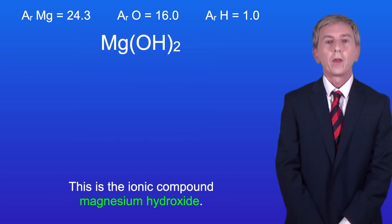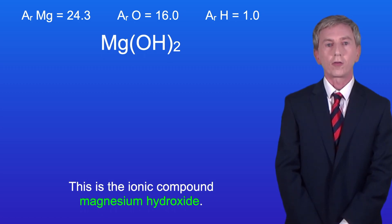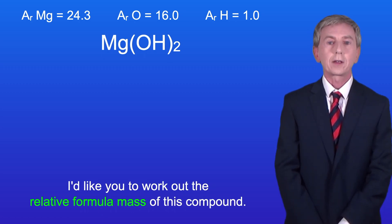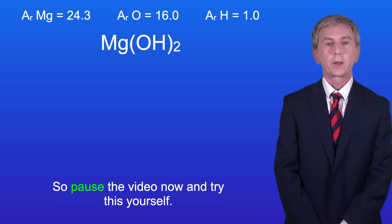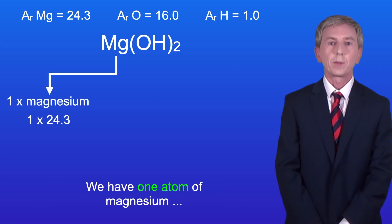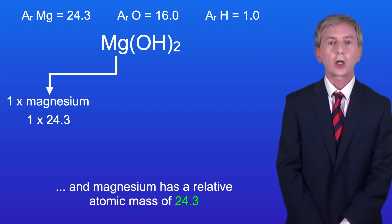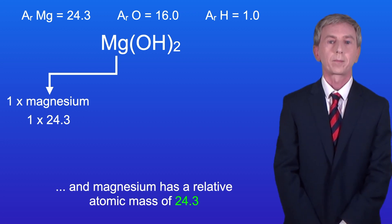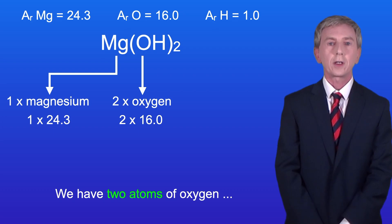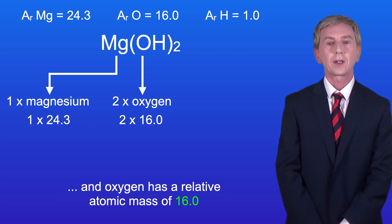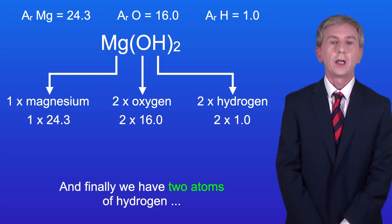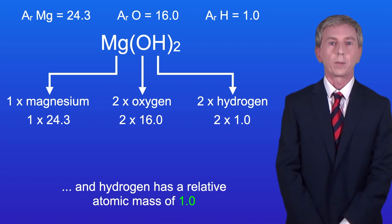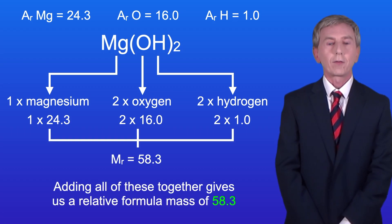I'm showing you an example here: the ionic compound magnesium hydroxide. Pause the video now and try to calculate the relative formula mass yourself. We've got one atom of magnesium with a relative atomic mass of 24.3, two atoms of oxygen with a relative atomic mass of 16.0, and two atoms of hydrogen with a relative atomic mass of 1.0. Adding all of these together gives us a relative formula mass of 58.3.